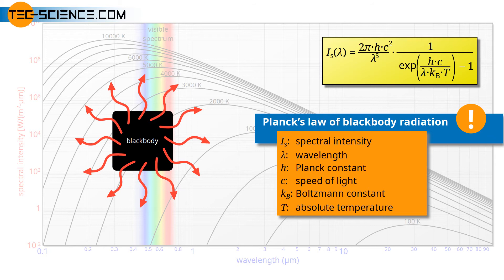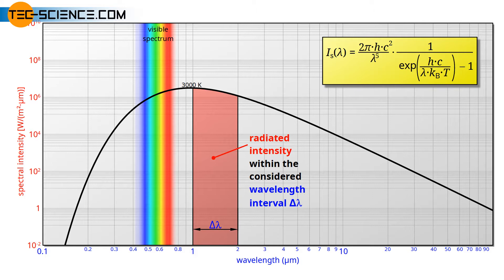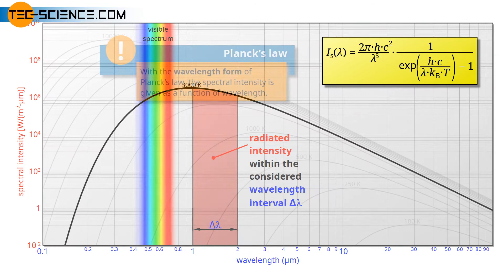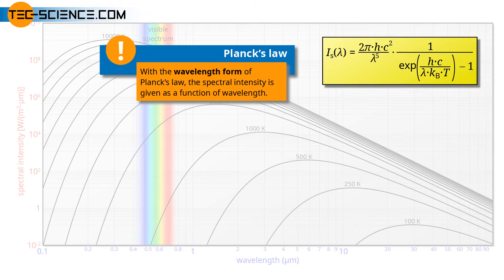If the spectral intensity is plotted over the wavelength, then in such a diagram the area under the curve corresponds to the emitted intensity in the wavelength range under consideration. There is a clear relationship between the wavelength of a radiation and its frequency, which results from the speed of propagation of the radiation — in this case, the speed of light.